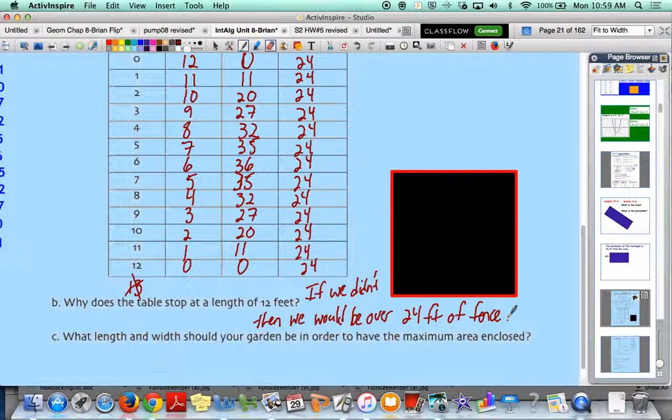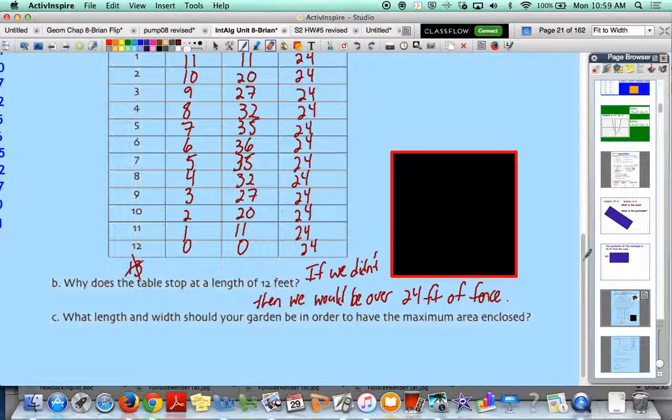Okay, we don't have enough fencing to go any more than 12, and really we don't have enough to go to 12 because that would mean a width of zero, which wouldn't make sense for a rectangle to have a length of 12 and a width of zero. It would be just all straight aligned. You'd just be lining up the fence in 24 feet, but you wouldn't be able to enclose it as a rectangle.